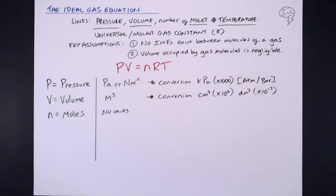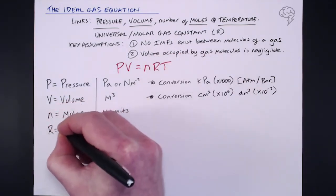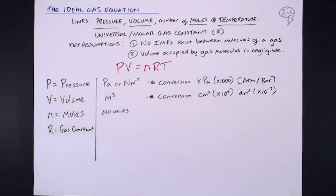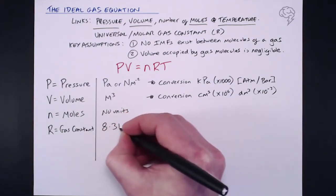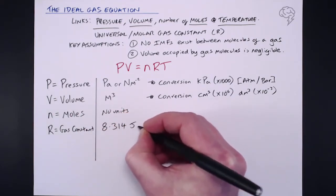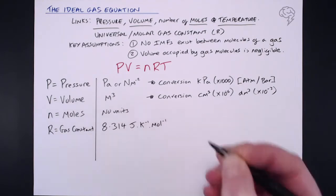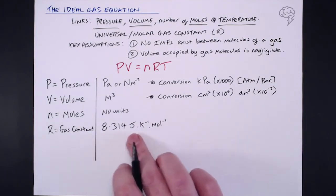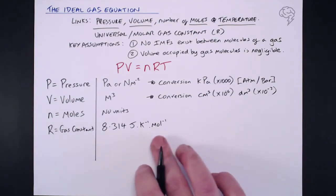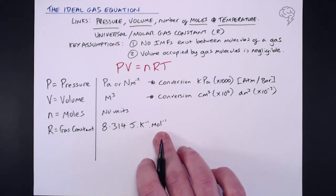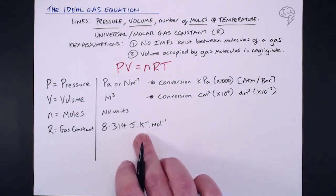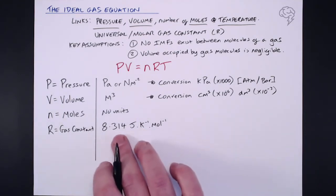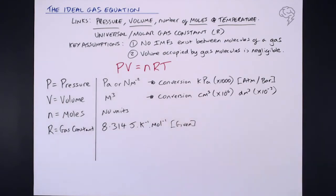Now onto this mystery gas constant. So R equals our gas constant. Now our universal gas constant or molar gas constant has this value, 8.314 joules per kelvin per mole. Now you do not have to remember this number. It's either given in the question or on your data sheet, but your units are important. Basically what this means is for every one mole of gas to increase its temperature by one kelvin, you need this many joules. As I say, you'll be given this in the exam.